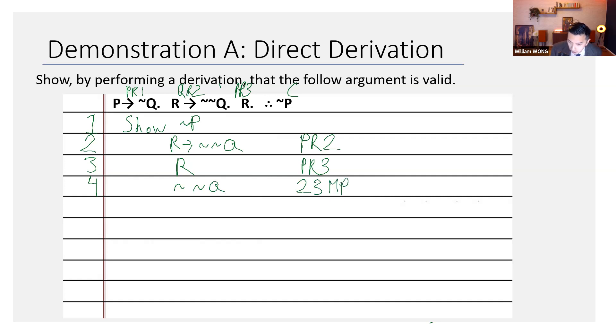Now, you don't have to write modus ponens out in its full form. You can just write MP. And we've done an inferential move so far, right? But we haven't yet reached our conclusion. There's more to be done.